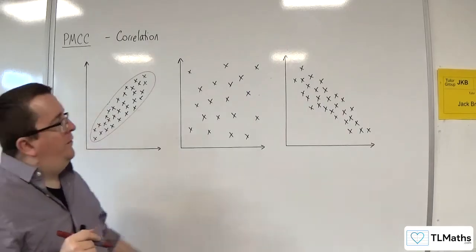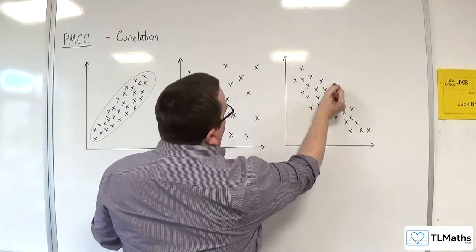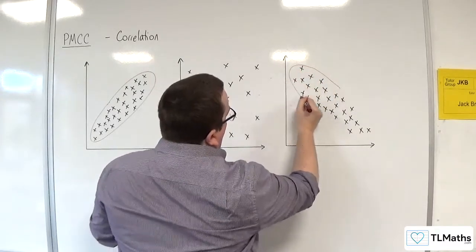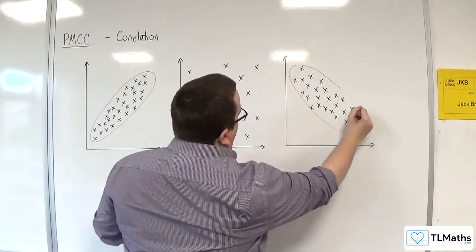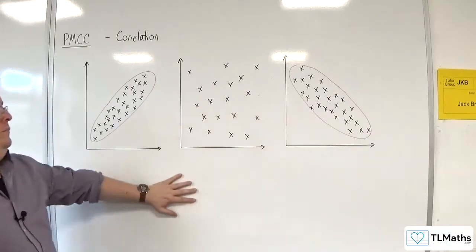And likewise, this is also roughly elliptical. I can draw an ellipse around the data.